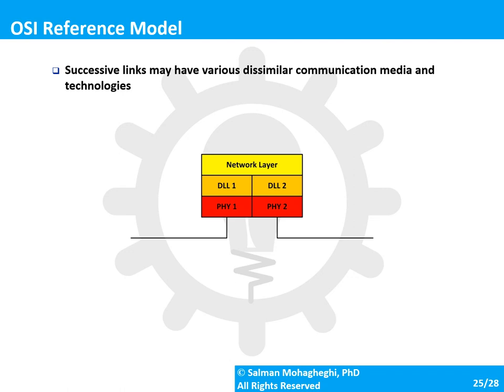In some textbooks you may see the physical layer split into two subcomponents for a router connecting two different communication media, indicating that the physical layer and data link layer for the first medium differ from those of the second medium.